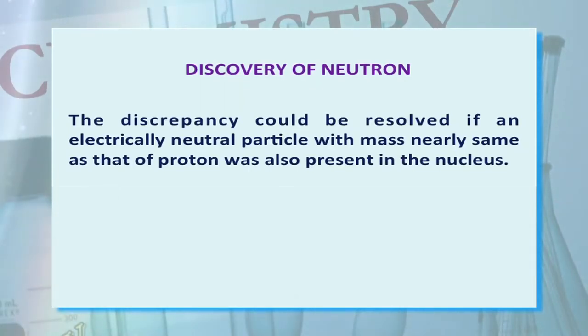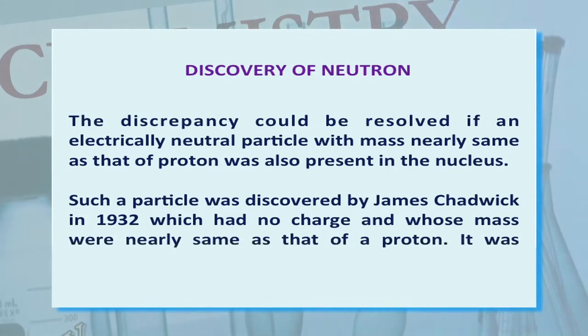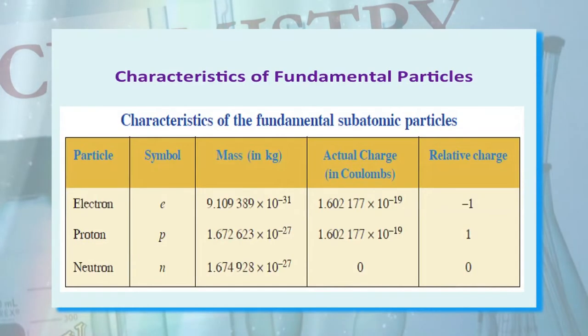The discrepancies could be resolved if an electrically neutral particle with mass nearly the same as that of a proton was also present in the nucleus. Such a particle was discovered by James Chadwick in 1932, which had no charge and whose mass was nearly the same as that of a proton. It was named the neutron. Characteristics of fundamental particles: This table shows the different particles — electrons, protons and neutrons — their symbol, mass, charge, and their actual charge in Coulombs.